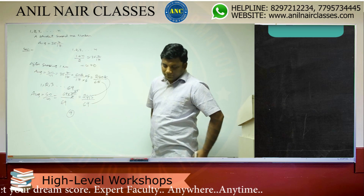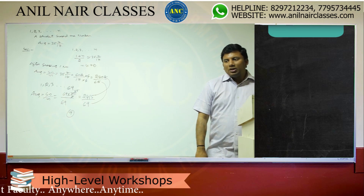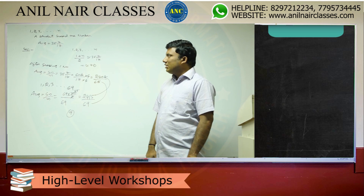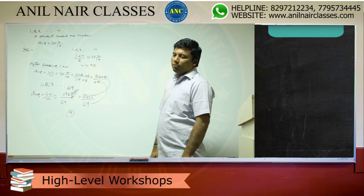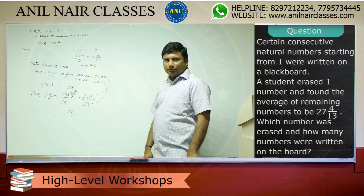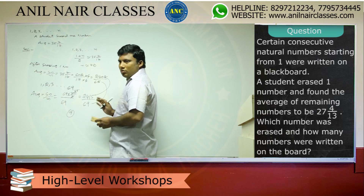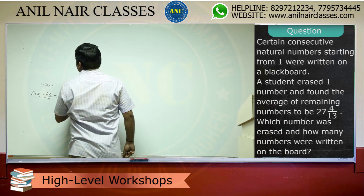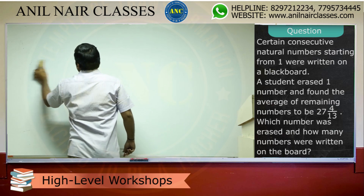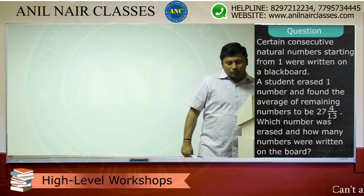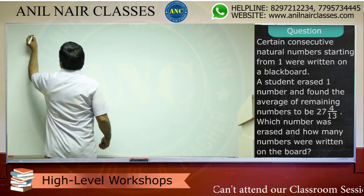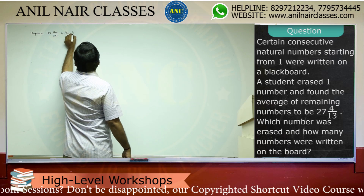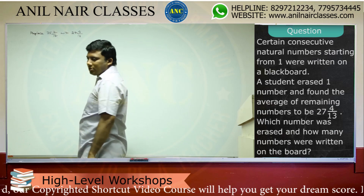Now for a practice question: replace 35 and 7/70 with 27 and 4/30 as the average after erasing. That is, replace 35 and 7/17 with 27 and 4/30. Let us solve this same type of question.